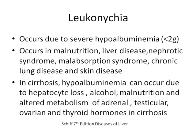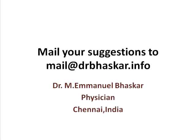In liver disease, hypoalbuminemia can occur due to multiple reasons. Primarily, it occurs due to an absolute decrease in hepatocyte number. Alcohol can have a direct toxic effect on albumin synthesis and cause hypoalbuminemia. Co-existent malnutrition can be another reason. Additionally, altered metabolism of hormones — especially from the adrenal gland, testes, ovaries, and thyroid — can contribute to hypoalbuminemia in cirrhosis.